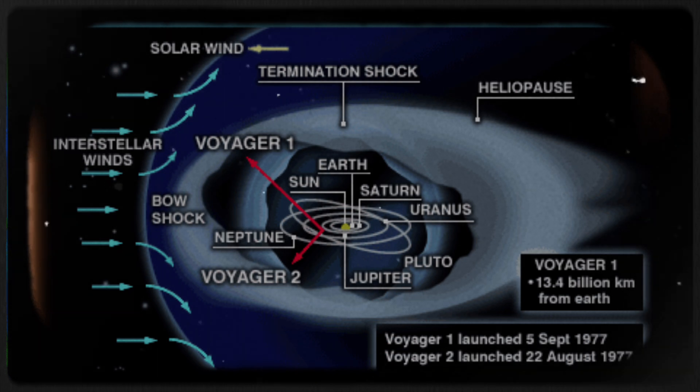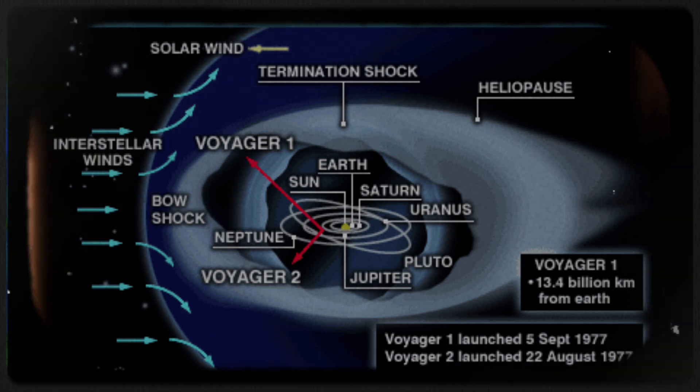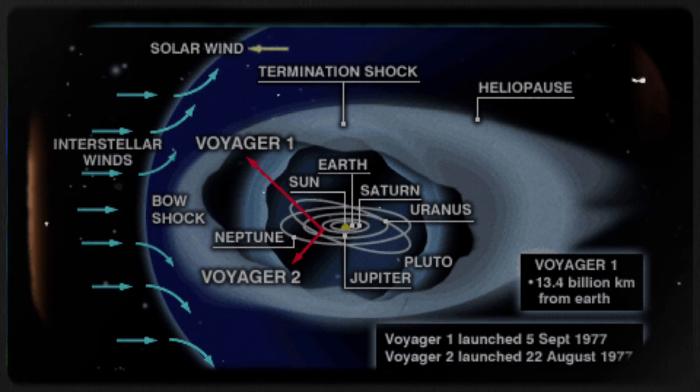The heliopause marks the border between our solar system and interstellar space, and before the Voyager missions, estimates of its distance varied greatly.